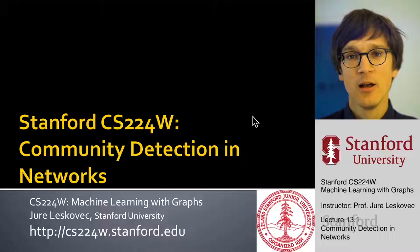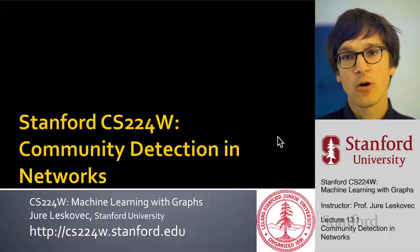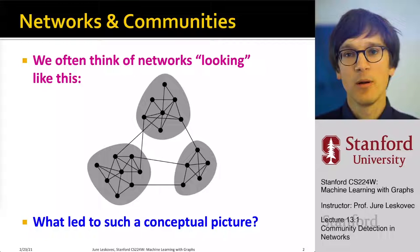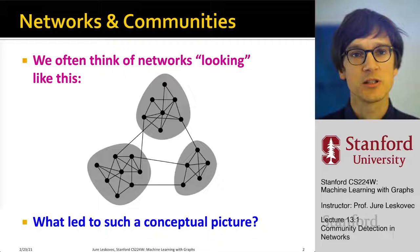Today we are going to talk about community detection in networks. Community detection is essentially clustering a set of nodes in a graph, based on the net structure of the network. We'll start by defining this problem, then discuss social science research that explains why we see these clusters in networks and why they make sense, which will inform the development of methods to do this.